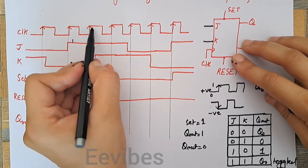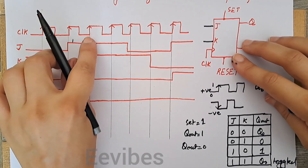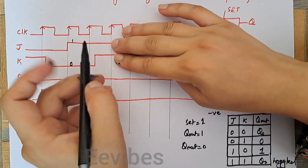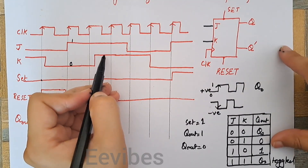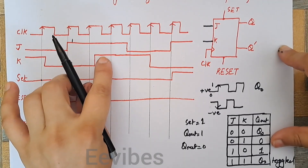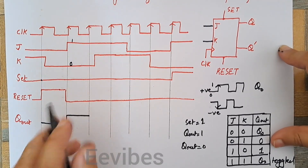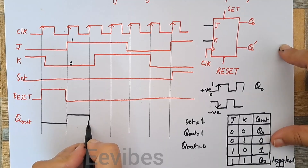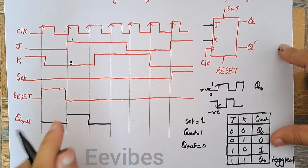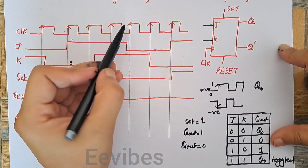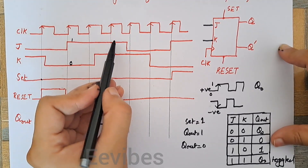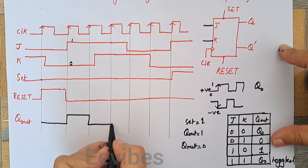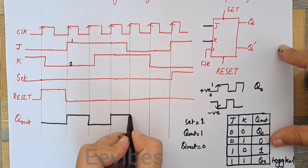For the next clock cycle, J and K are both equal to 1, which will force the flip-flop to toggle. Toggling means the output will be complemented — since the output was equal to 1 previously, it will shift to 0. Going to the next cycle, J and K are still both equal to 1, so it forces the output to toggle again, switching from 0 to 1.